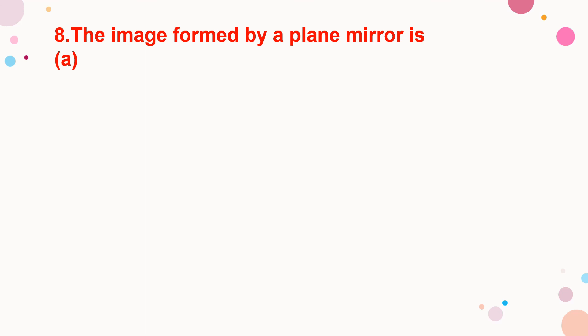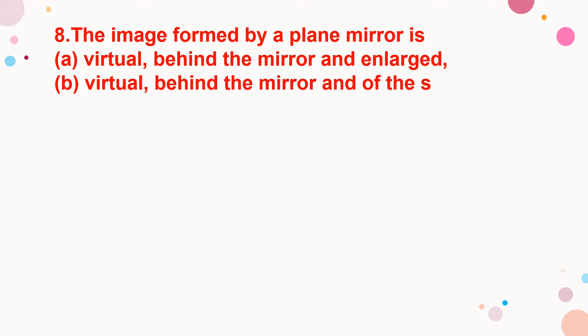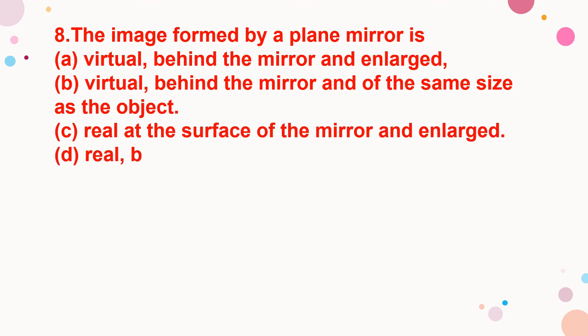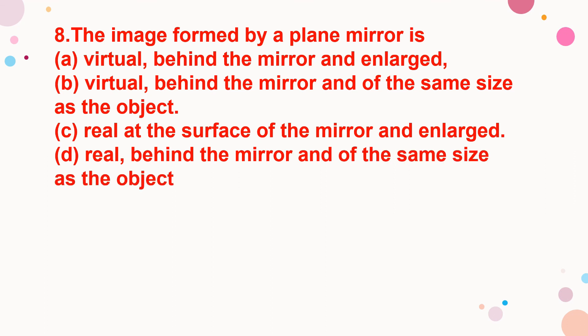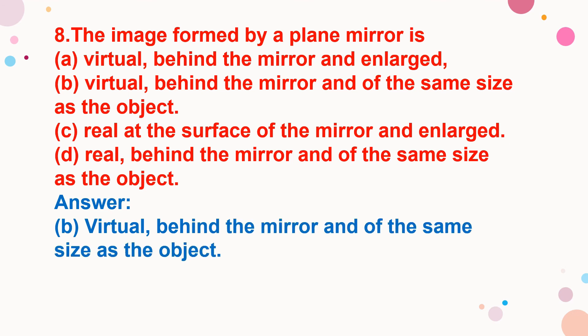The image formed by a plane mirror is: virtual, behind the mirror and enlarged; virtual, behind the mirror and of the same size as the object; real, at the surface of the mirror and enlarged; or real, behind the mirror and of the same size as the object? The correct answer is: the image formed by a plane mirror is virtual, behind the mirror, and of the same size as the object. This is one of the key characteristics of images formed by a plane mirror.